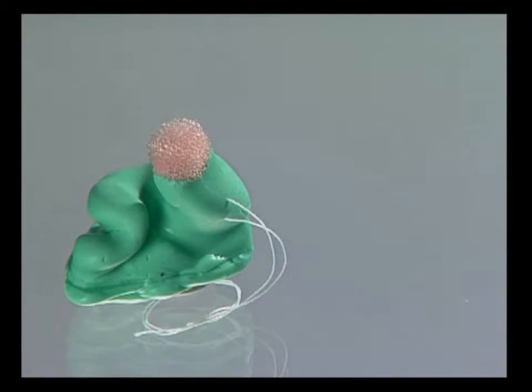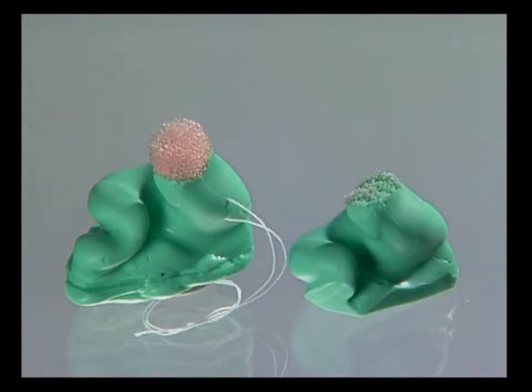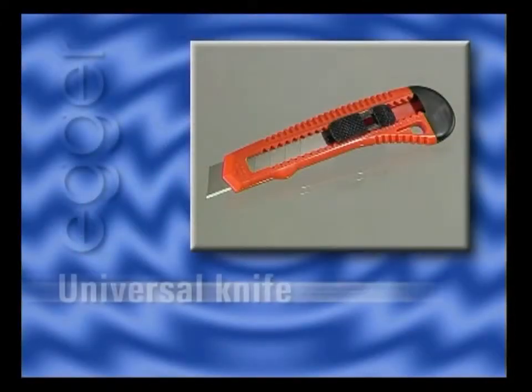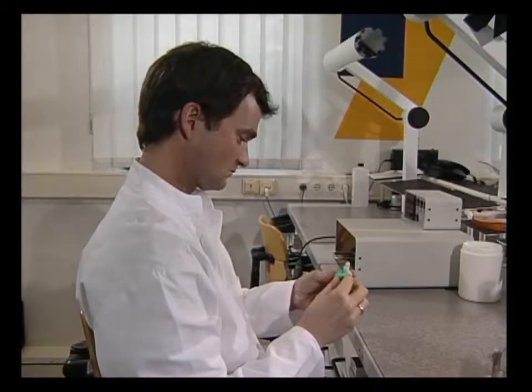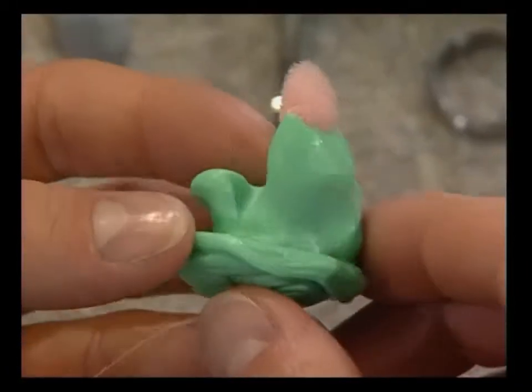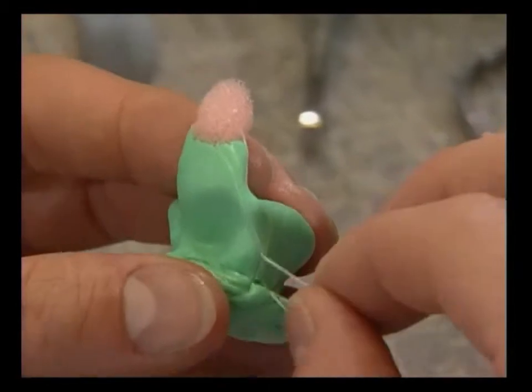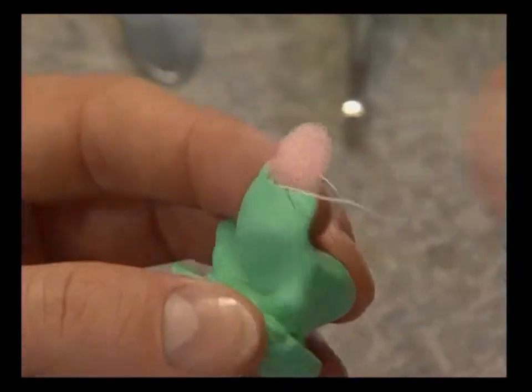The first step in the production of a transparent silicone control form is to cut the impression to size. A universal knife is used for cutting the impression. The thread with the impression plug is then removed.